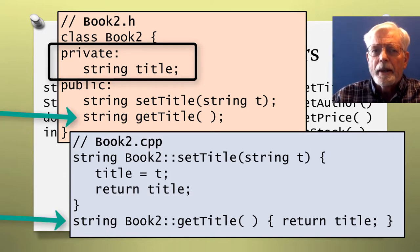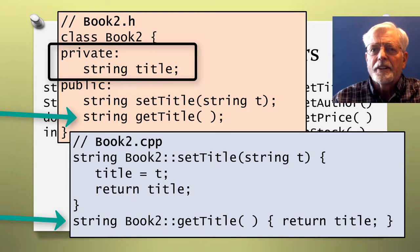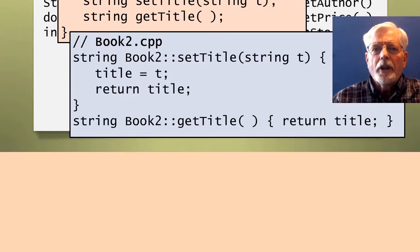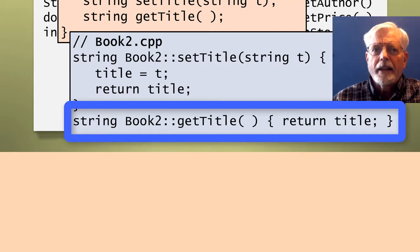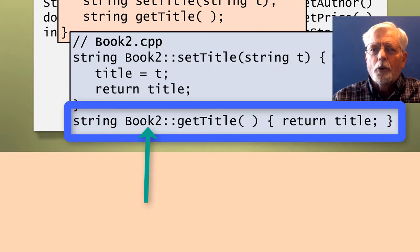Since title has private access, we need a getter method to let main retrieve whatever is in the title. Book2.h now has a function prototype for GetTitle with a return data type of string. The code implemented in Book2.cpp is placed all in one line in this example. String is the return data type. Book2 colon colon identifies that this code belongs to the class Book2.